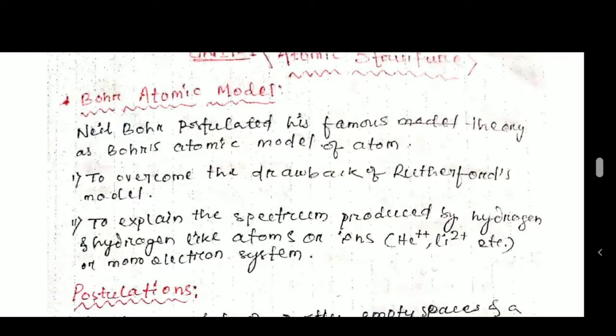This is known as the hydrogen spectrum. A mono-electron system means an atom consisting of only one electron. Atoms like He⁺, Li²⁺, etc. are examples of mono-electron atoms.